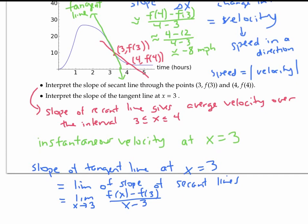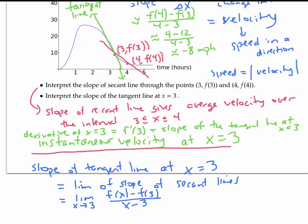So to repeat, in this example, the slope of the secant line represents the average velocity over a time interval, and the derivative at x equals three, written f prime of three, which is also the slope of the tangent line, that derivative represents the instantaneous velocity at x equals three.